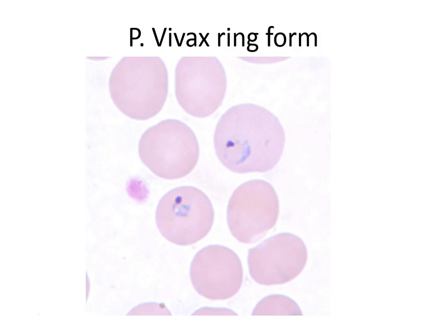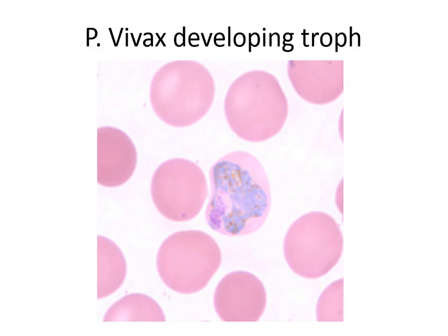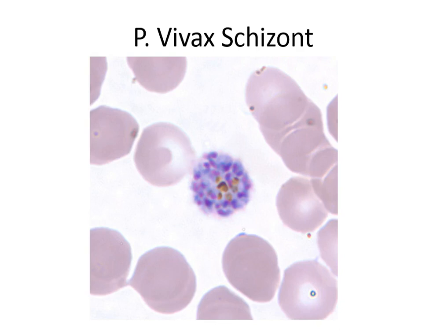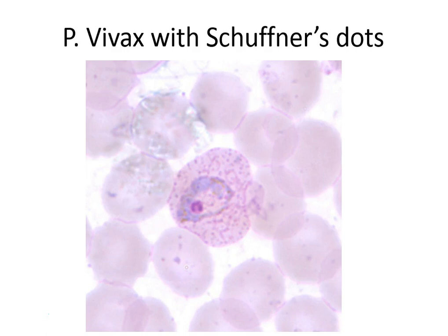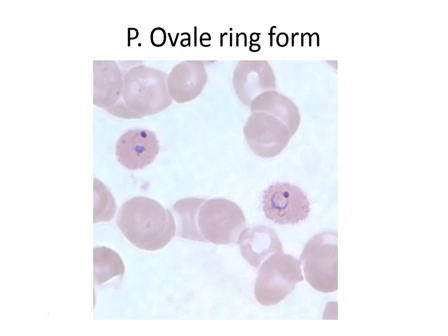P. vivax has a 48-hour life cycle. The red cells are larger than normal and the ring takes up one-third of the red cell. Schüffner's dots can be seen — they are condensed hemoglobin. There are 12 to 24 merozoites. Patients with vivax have photophobia — that is the only species associated with photophobia.